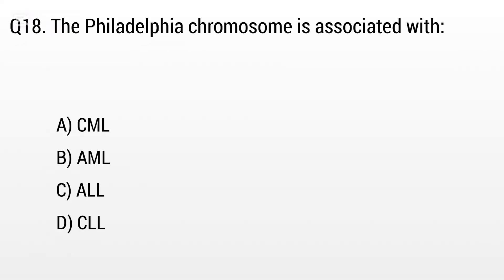Question 18. The Philadelphia chromosome is associated with: Option A: CML, B: AML, C: ALL, D: CLL. But the right answer is Option A: CML.